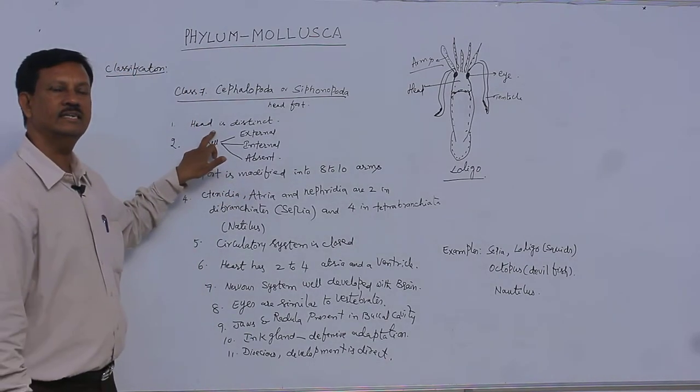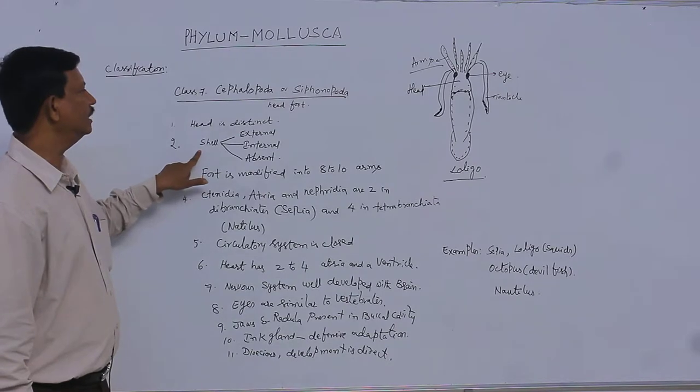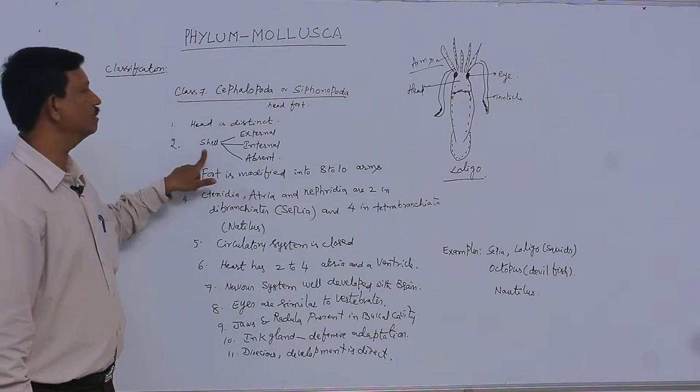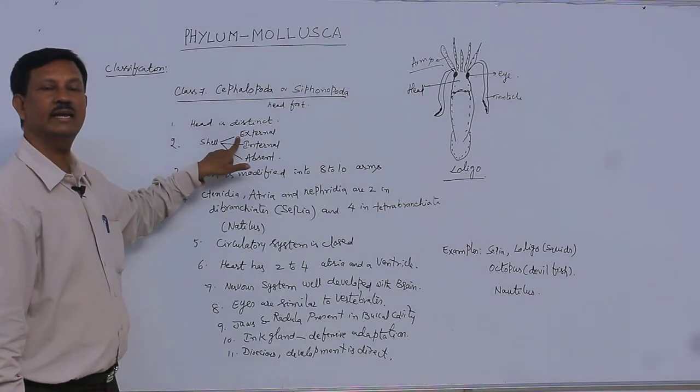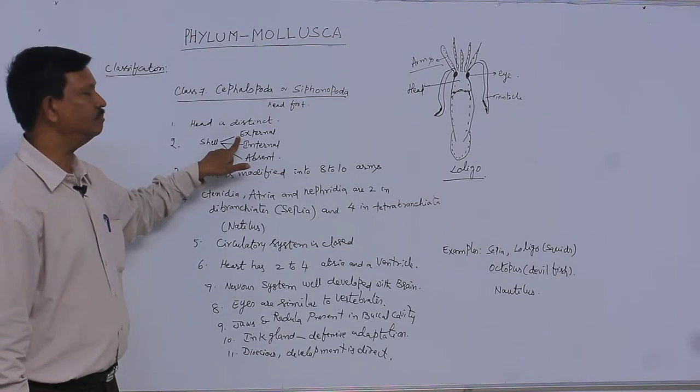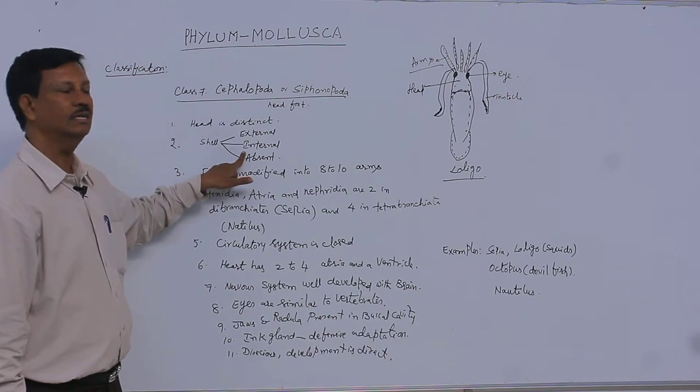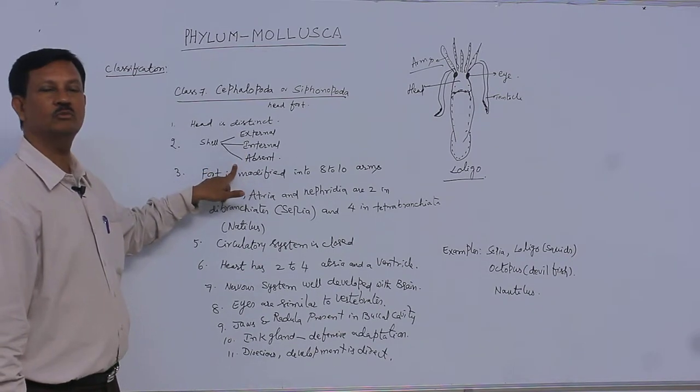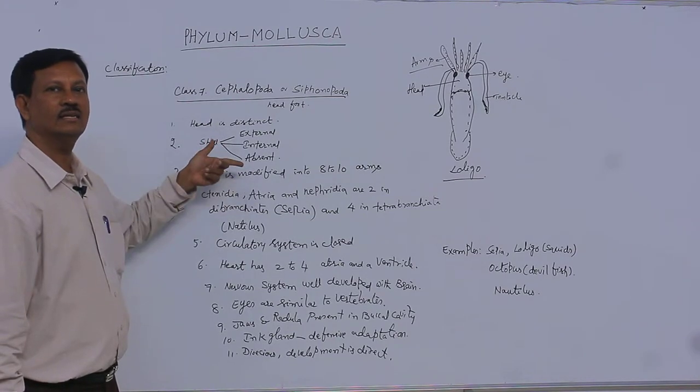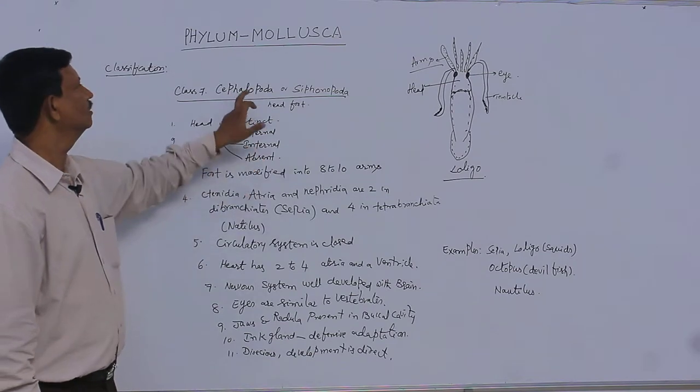The body is covered by a shell. There are different types of shells present. In some members, shells are present on the external surface, outside the body. In some members, the shell is present only internally, not present outside. In some members, no shell is present—the shell is completely absent. It may be external, internal, or absent. There are different types of shells present in different members of the Cephalopoda.